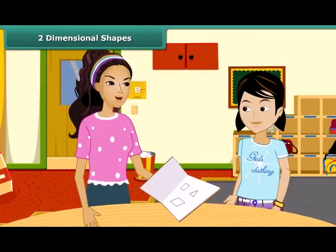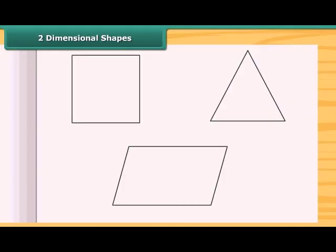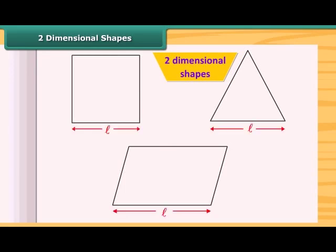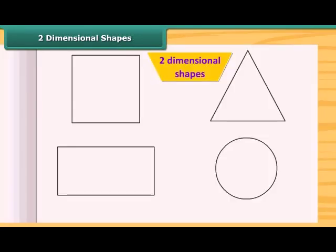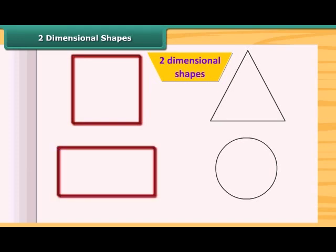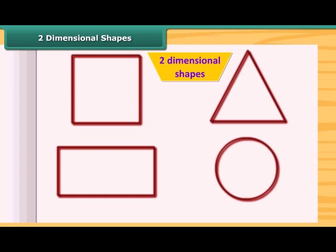Look at these shapes. These are all two-dimensional shapes. They have only two measurements, length and breadth. You mean all the shapes that we draw in our notebook are two-dimensional? Yes, you are right. All those shapes that we can draw on our paper and which have only two measurements are two-dimensional shapes. A square, rectangle, triangle, circle, etc. are examples of two-dimensional shapes.